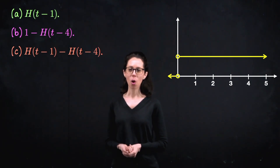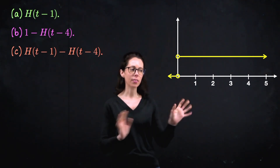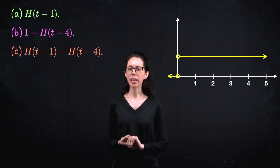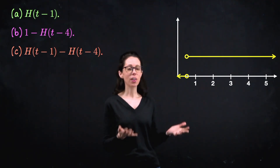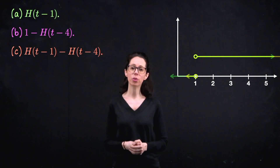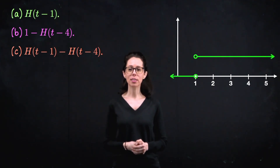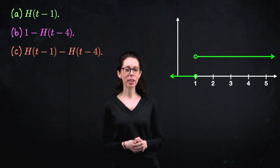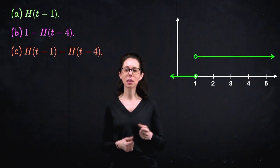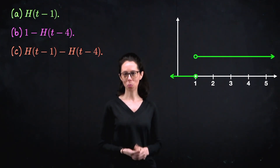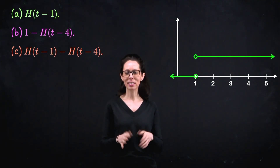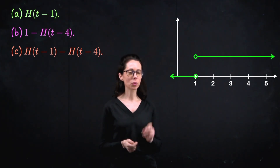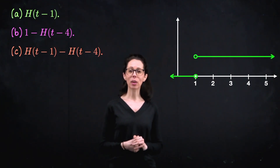Let's start with part a. What would it look like if instead of h of t, I wanted to graph h of t minus one? Well, just algebraically, that's this function translated one unit to the right. So this is going to be the function which is zero when t is less than one, and one when t is greater than one. You can use this to flip something on when time equals one — maybe you have some signal and from zero to one seconds it's not present, and then when time equals one, we turn it on by multiplying with this function.